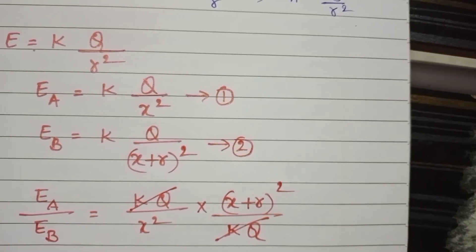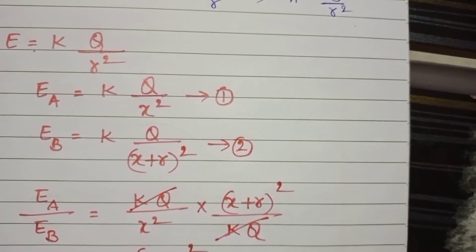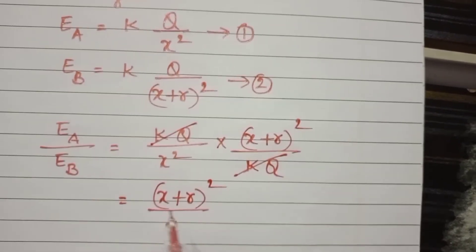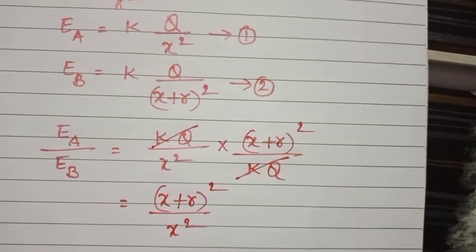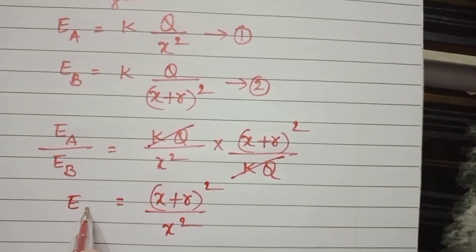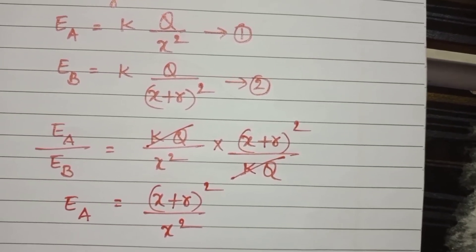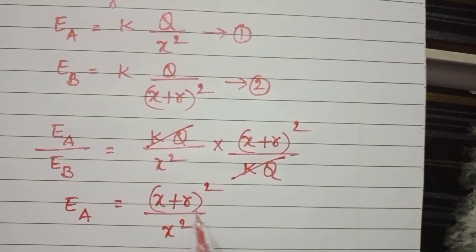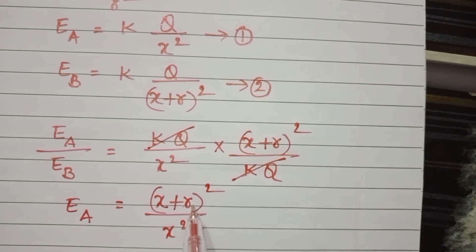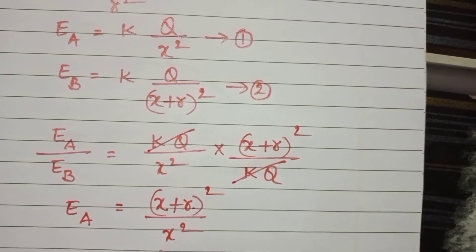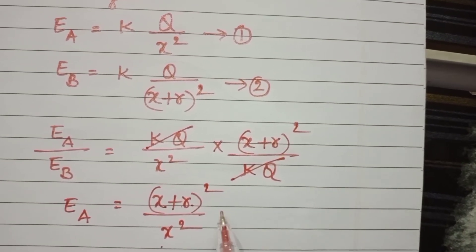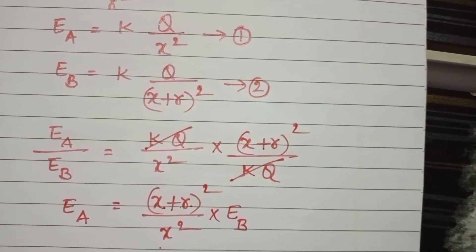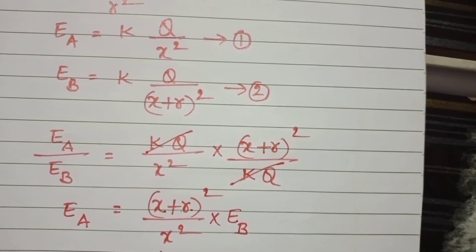After cancellation, EA/EB = (X+R)²/X². Therefore, the intensity of electric field at point A equals (X+R)²/X² multiplied by the intensity of electric field at point B.